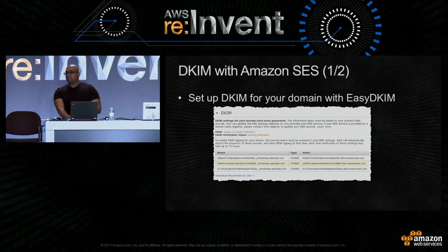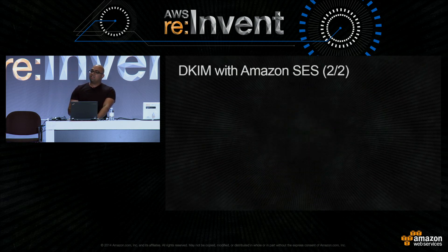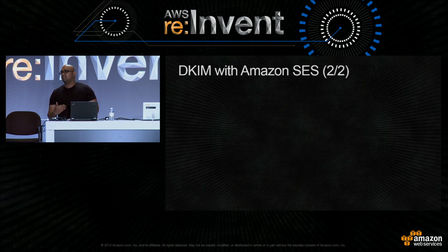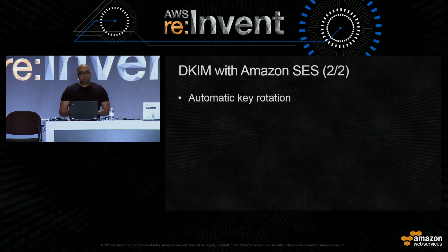One other thing to note about using DKIM on top of SES: you can certainly sign your own emails ahead of time and then send those requests to SES, and we'll still deliver them. But there are good reasons to let us sign the email on your behalf. One of them is that we will do automatic key rotation for you — periodically rotating the public-private key pair associated with your cryptographic signing for DKIM without you having to intervene. As a result, we provide a stronger level of security around these cryptographic signatures.